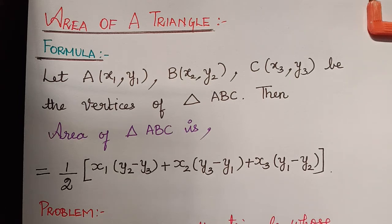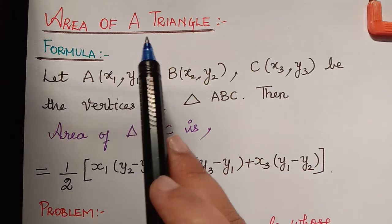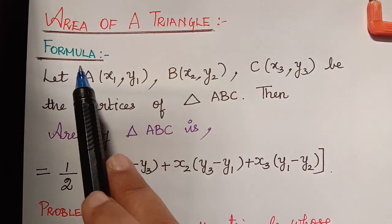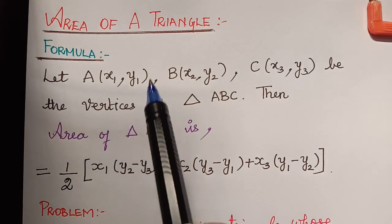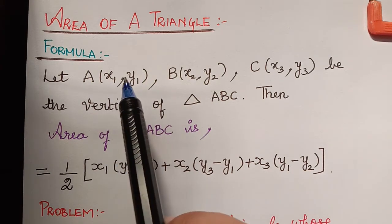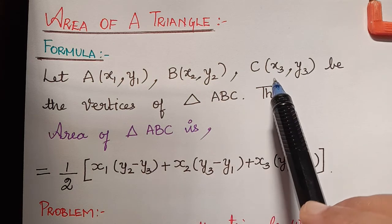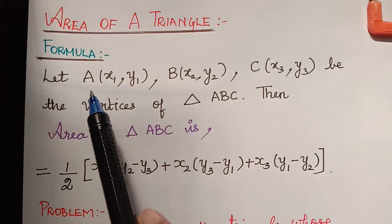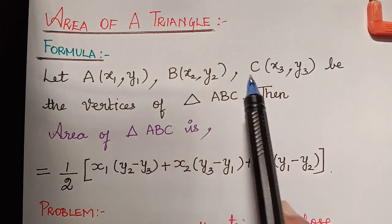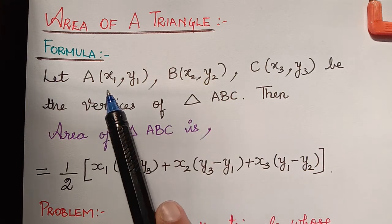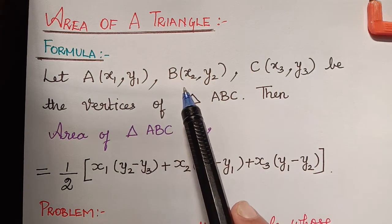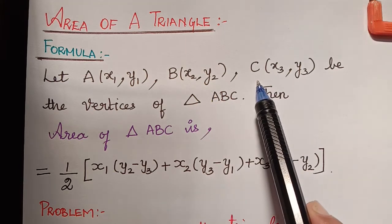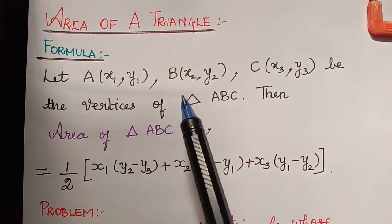Hello students. Under the topic coordinate geometry, the next formula we are going to learn is the area of a triangle. The formula involves a triangle with three vertices, which we consider to be A, B, C with coordinates x1 comma y1, x2 comma y2, and x3 comma y3.